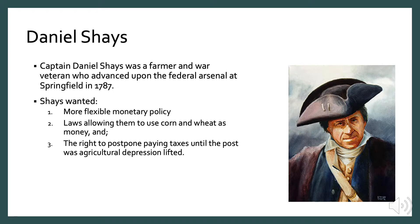Daniel Shays was a captain and war veteran who advanced upon the federal arsenal at Springfield in 1787. Shays' demands included more flexible monetary policy, laws allowing farmers to use corn and wheat as money, and the right to postpone paying taxes until the agricultural depression was lifted.